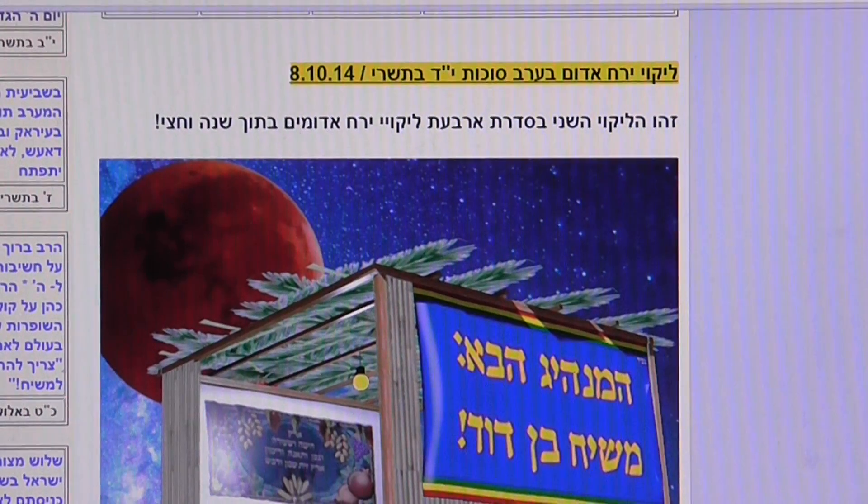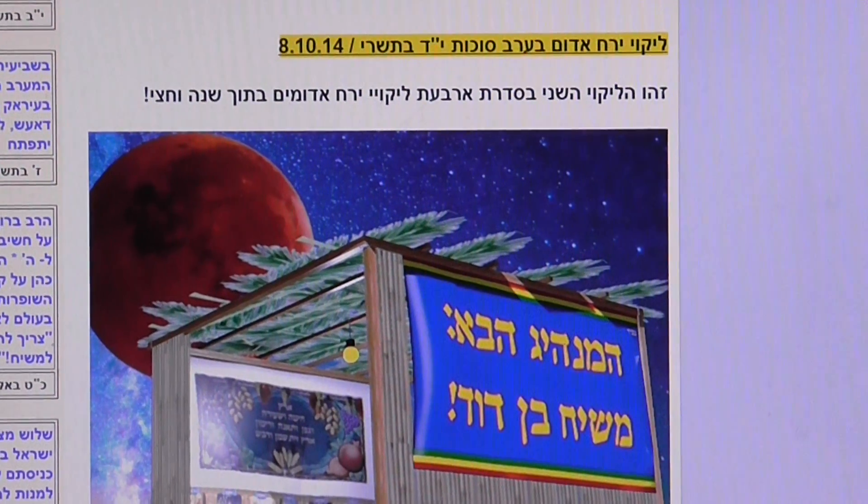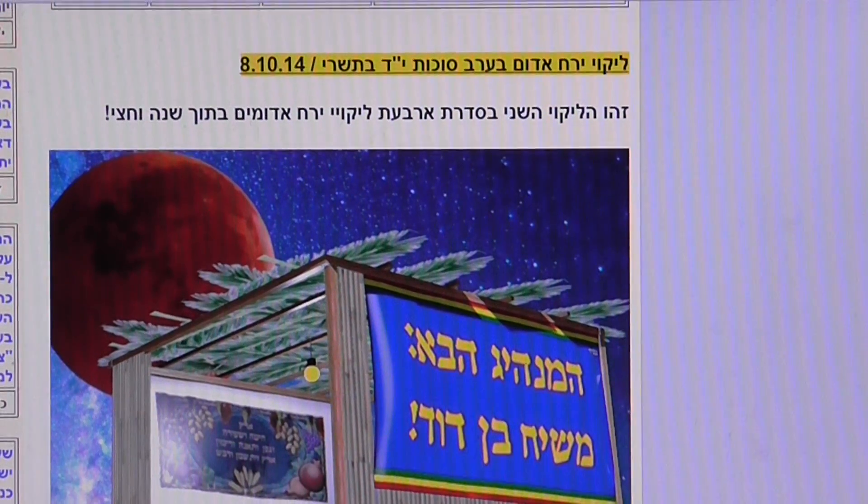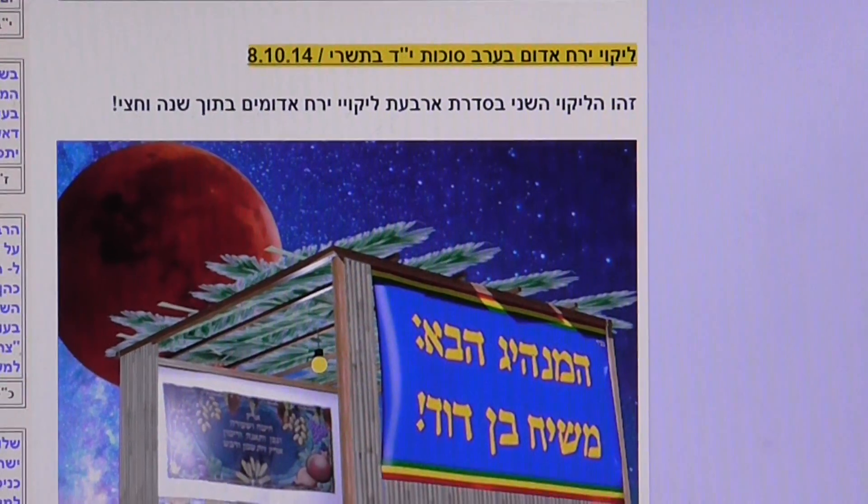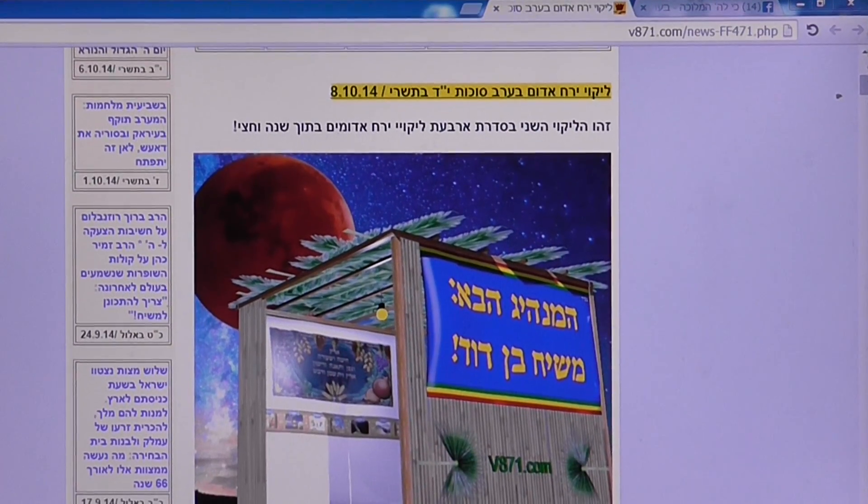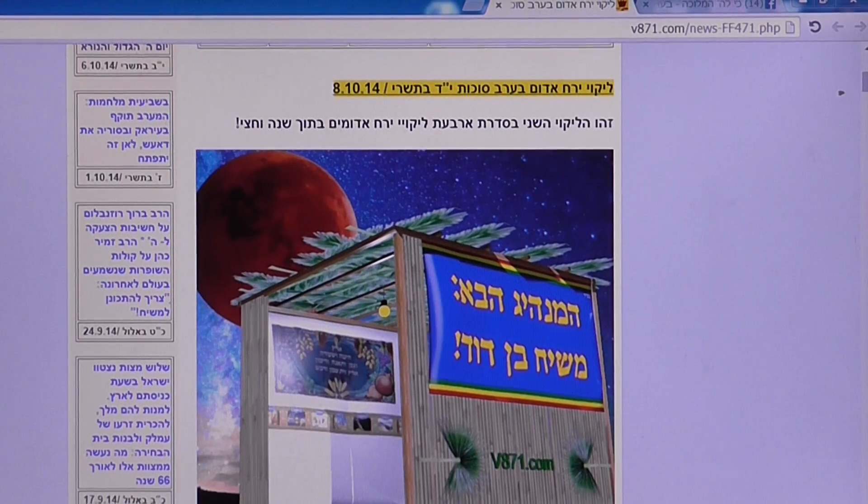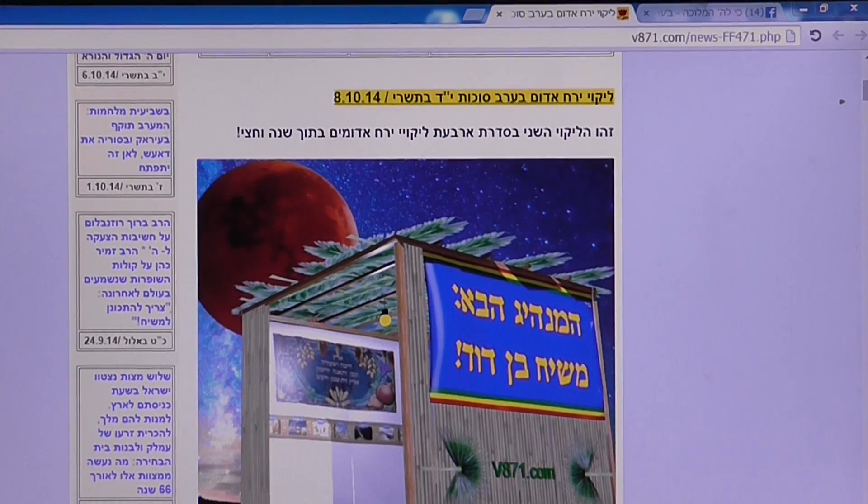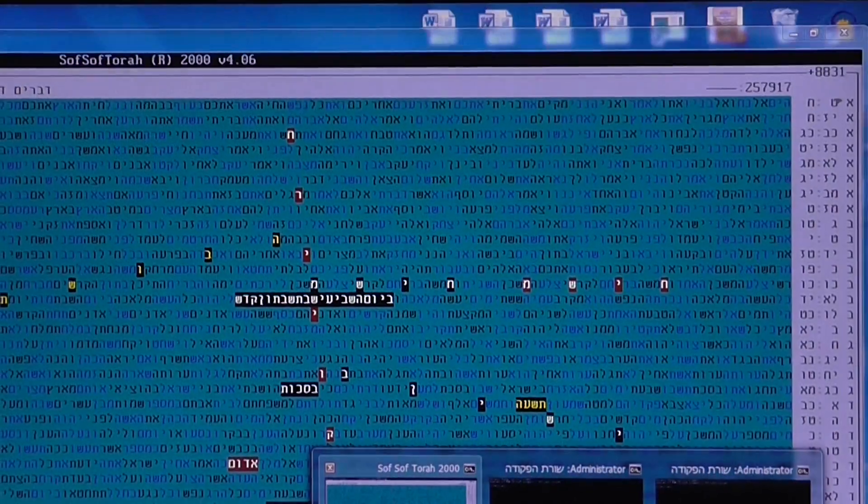Now let us see the table itself, a very interesting table, which as we will see, has a lot of interesting indications to this eclipse of the Moon, which is called Blood Moon. Tomorrow evening, when we will be in the sukkah, sitting in the sukkah, we will see it.